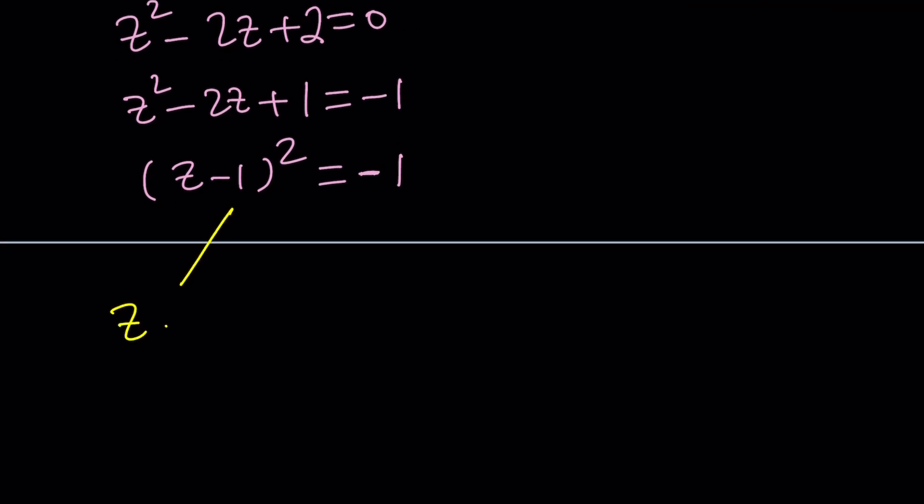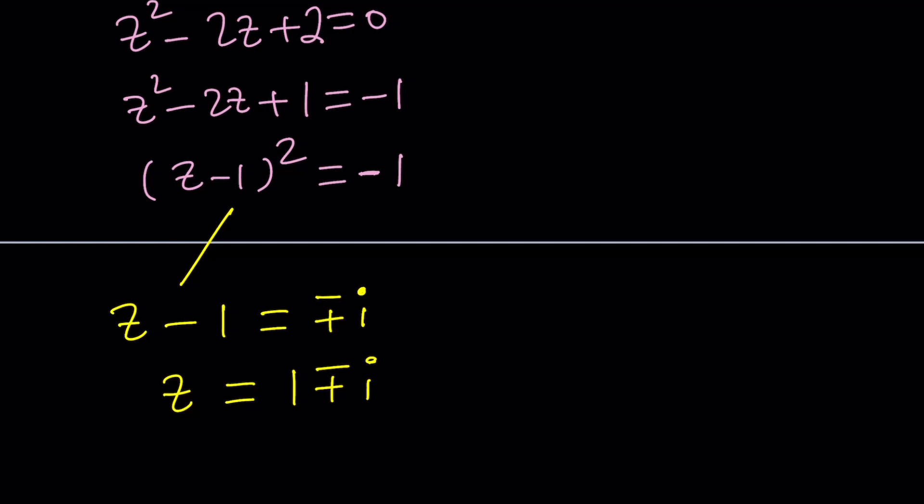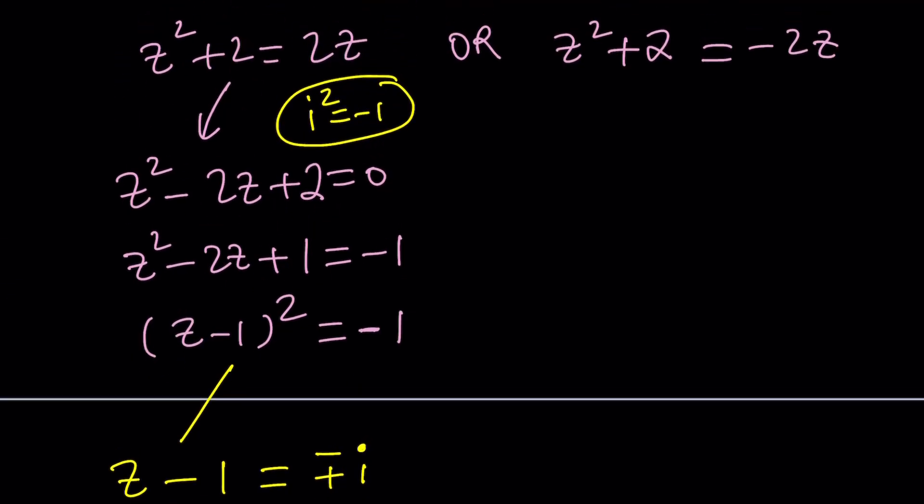So from here, we can write z minus 1 is equal to plus minus i. Because when you square plus minus i, you always get i squared, which is negative 1. So that works. Now, adding one to both sides, we get z equals 1 plus minus i. That gives us two of the solutions to this equation. Let's go ahead and solve the other one.